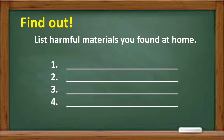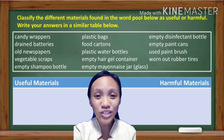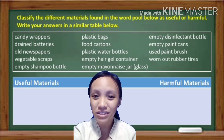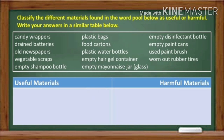Now that you know that there are harmful substances at your home, list at least four substances you found at your own home. Let's do a simple activity — you just have to identify which materials are useful and which materials are harmful. Good luck!